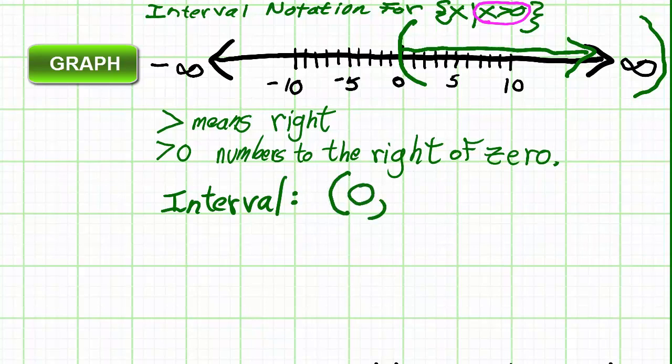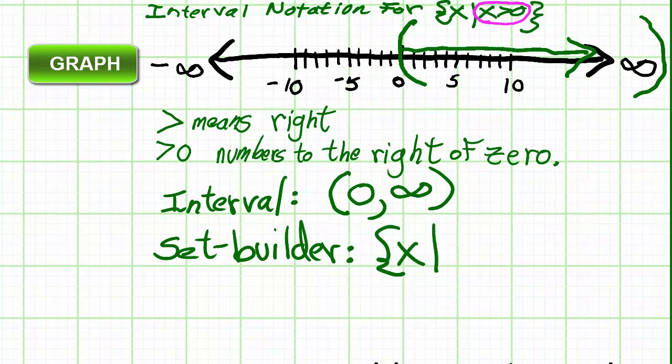The way you write the interval notation is right here. Remember, parenthesis zero comma infinity, parenthesis closed, means exactly the same thing as the graph and as the statement above. And by the way, the statement above reads all the numbers in our number system, such that the numbers we choose are greater than zero.